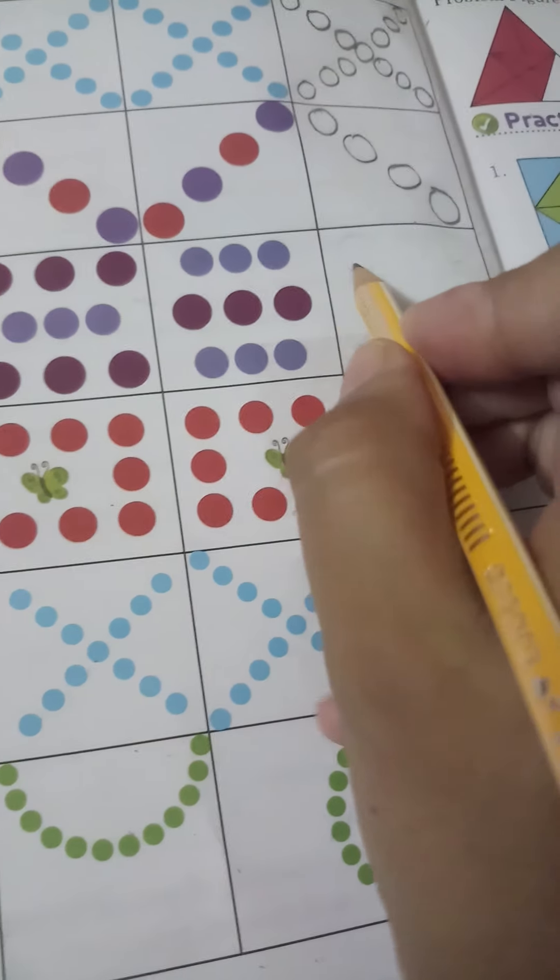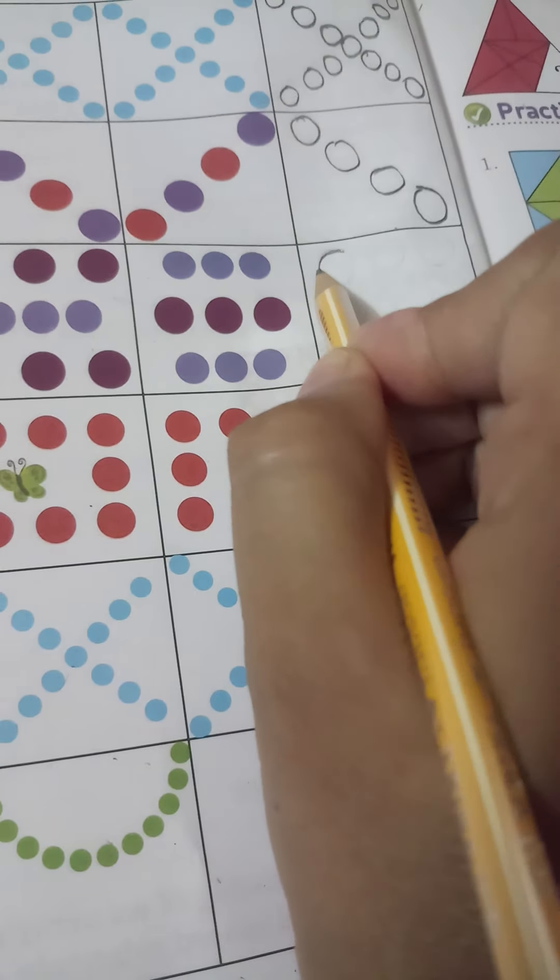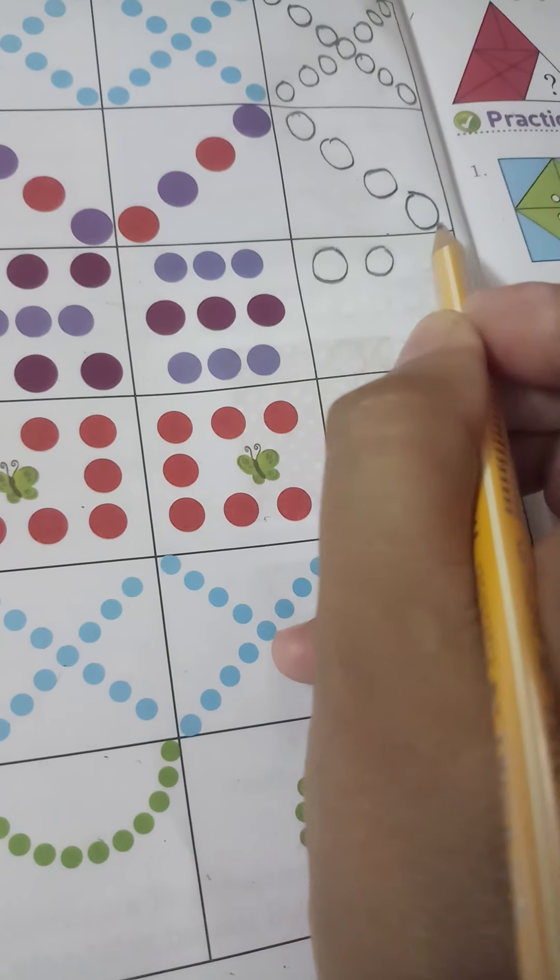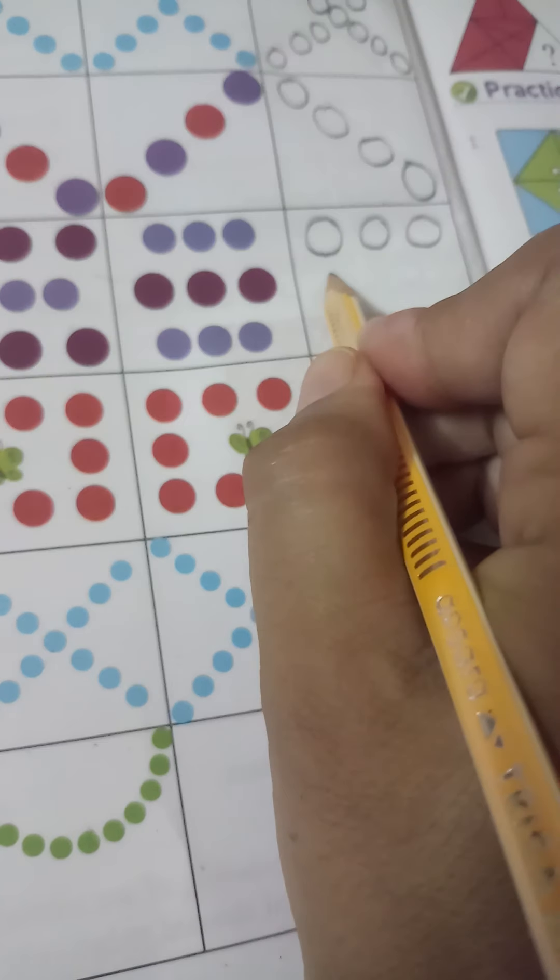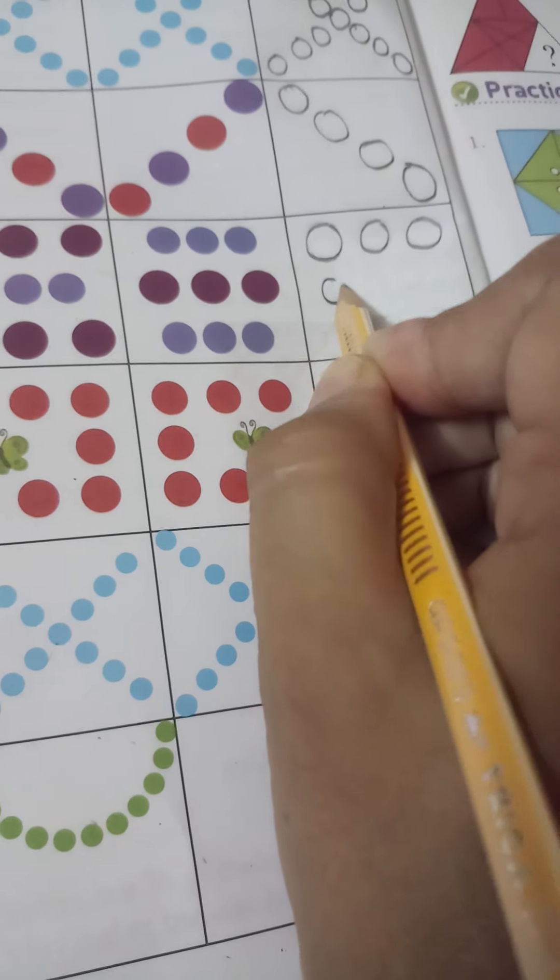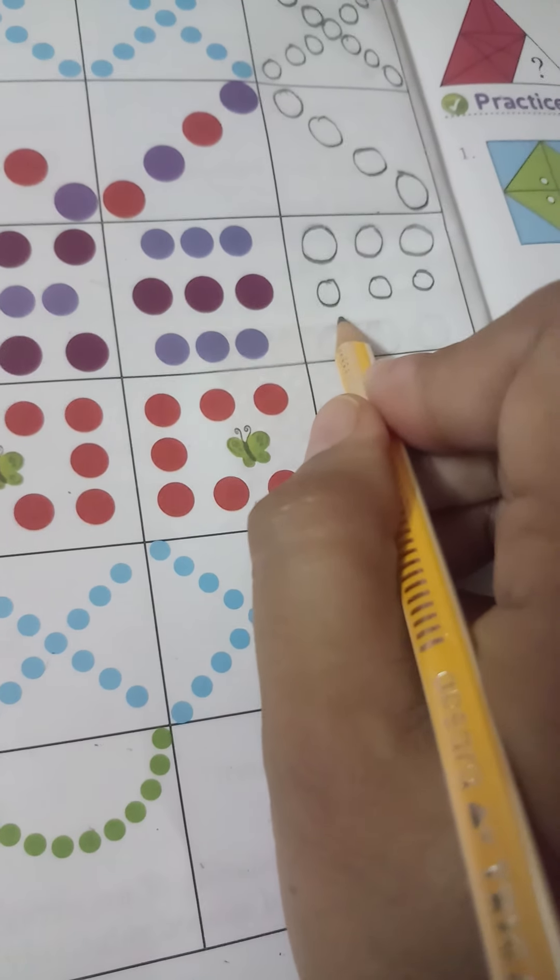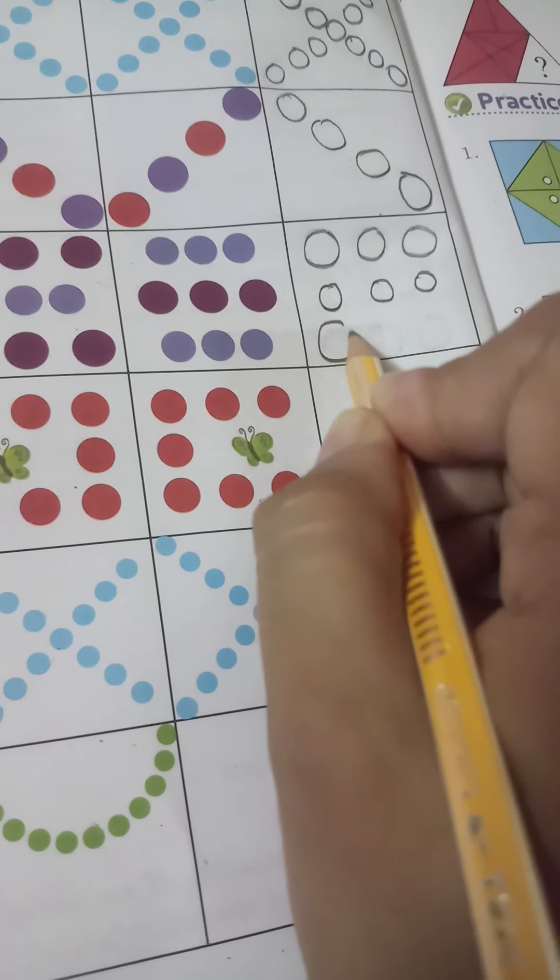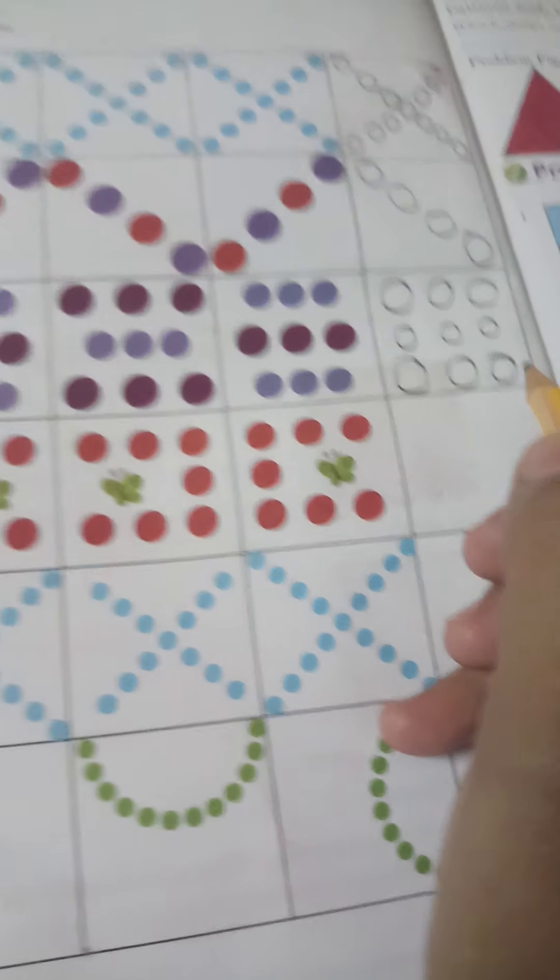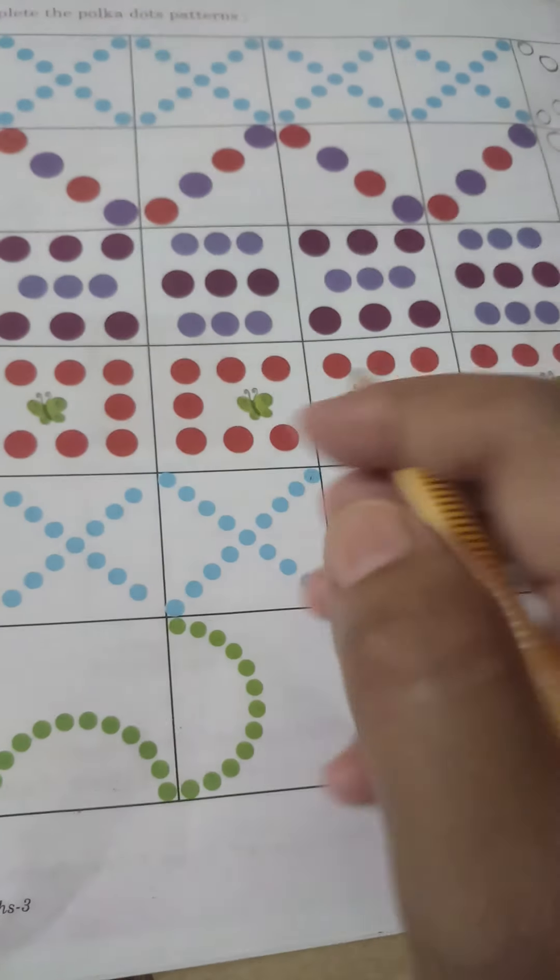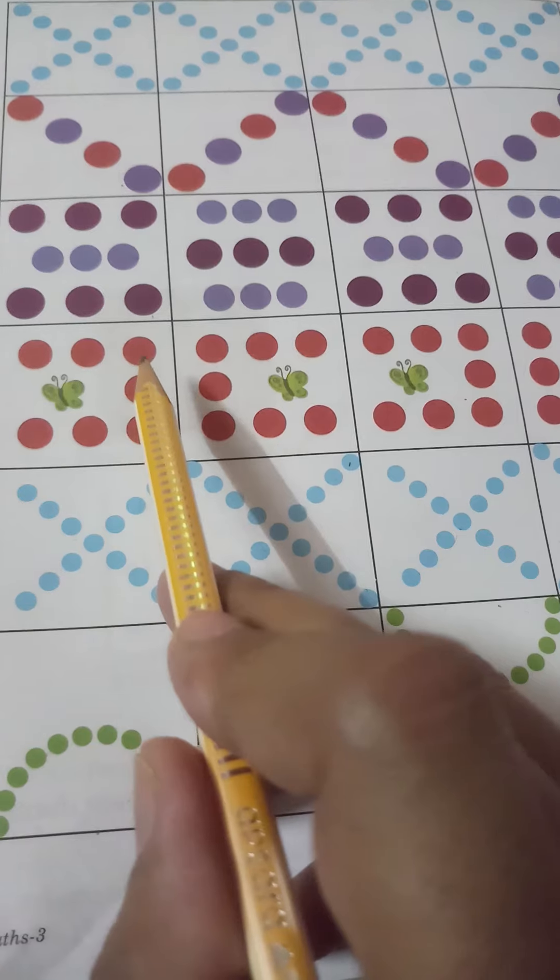We will make here small dots between the big dots. Complete this. Make big dots between small dots. Next again, big dot, complete this.